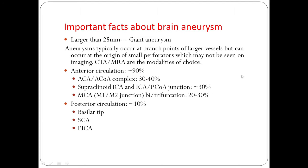There are certain important facts about brain aneurysms we should remember. We call it a giant aneurysm when the size is more than 25 millimeters. Aneurysms typically occur at branch points of large vessels, but can also occur at the origin of small perforators which may not be seen on imaging. CT angiography and MR angiography are the modalities of choice to localize the aneurysm and determine its size for further management.